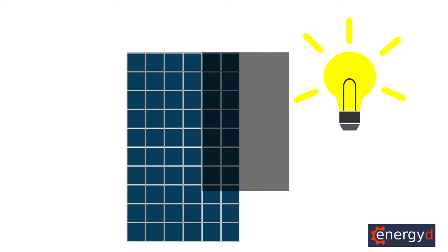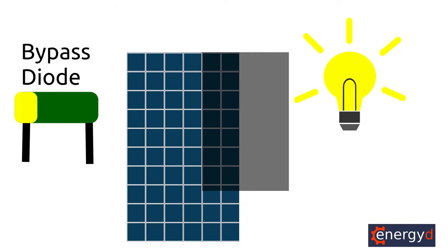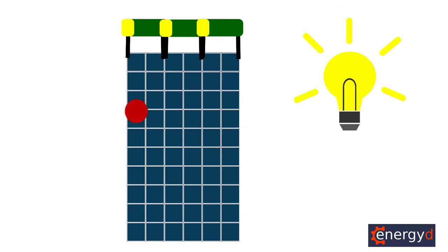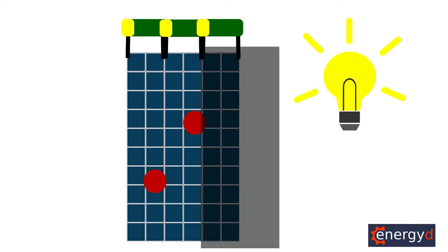The answer is no and you can thank a little device called the bypass diode. Just about every solar panel sold today comes with three bypass diodes. These diodes make sure that a few shaded cells won't drag down the power production of all the others.